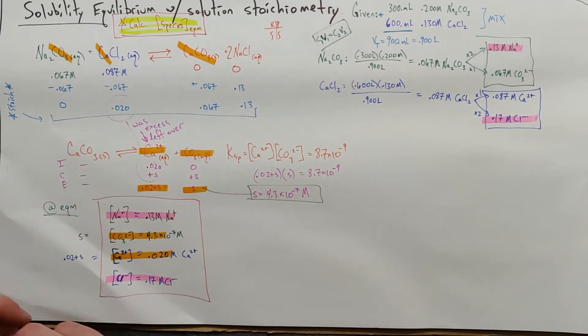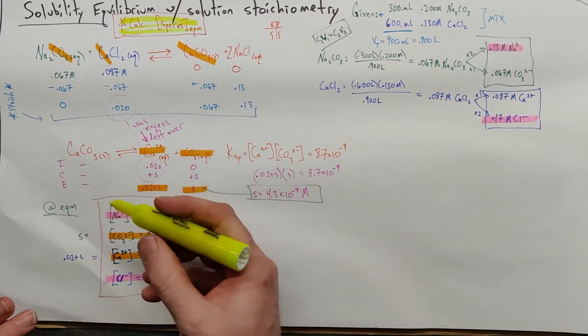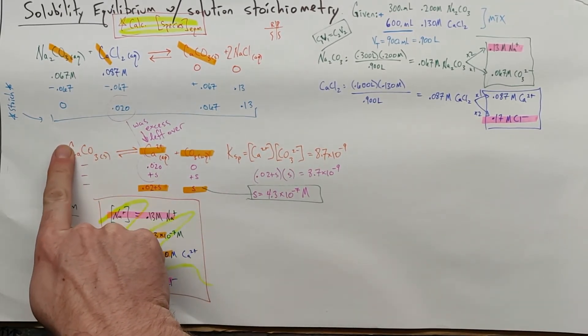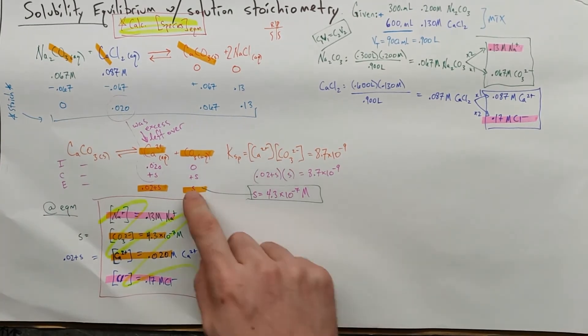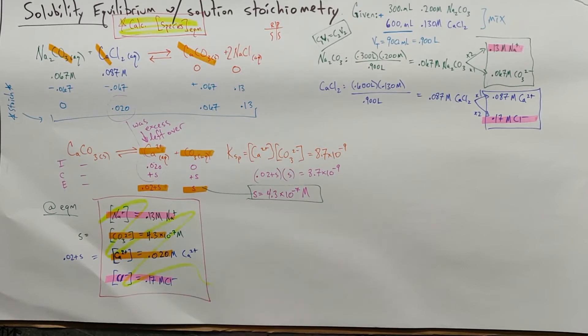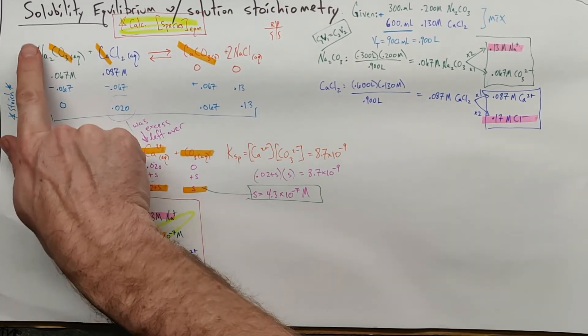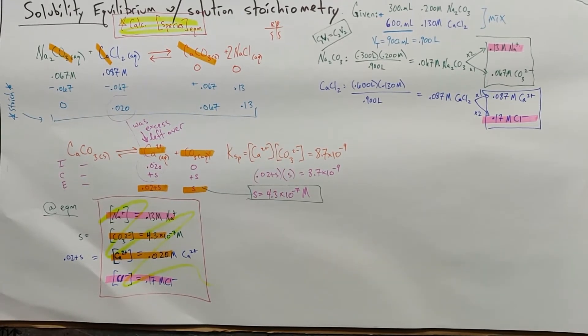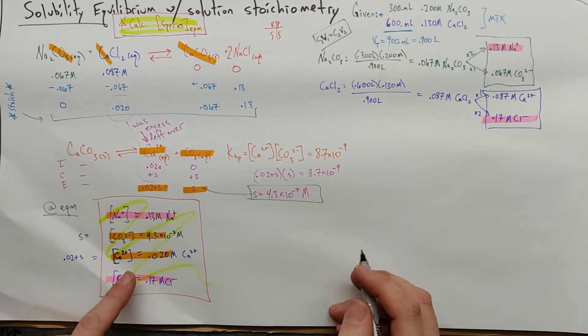Once again, essentially a two-step process. Step one, do stoichiometry. Step two, take your solid, your precipitate, and figure out how much of it actually goes into solution because you can't have a zero at equilibrium and then you've got your answers. Do the stoichiometry, fix it with equilibrium.